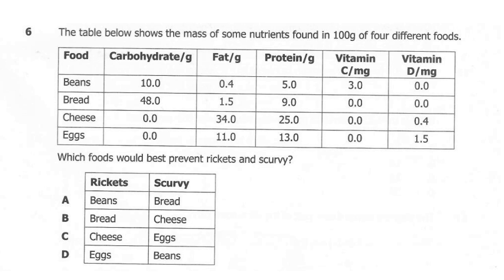For vitamin D — beans and bread: 0.0, cheese: 0.4mg, eggs: 1.35mg. The question asks: which foods would best prevent rickets and scurvy? A: beans and bread. B: beans and cheese. C: cheese and eggs. D: eggs and beans. So what is the correct answer here? Is it A, B, C, or D?